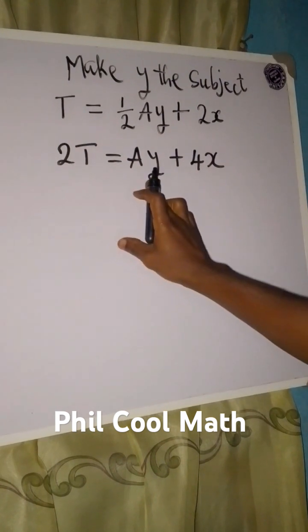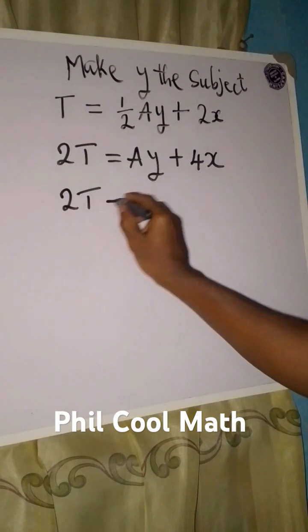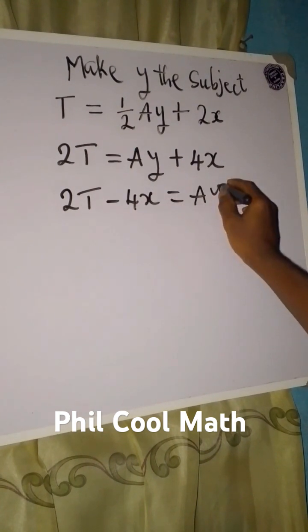Now the next thing is to make Ay the subject. So we have 2T, this becomes minus 4x and this is equal to Ay.